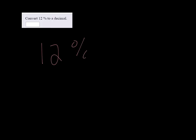Convert 12% to a decimal. So 12%, since it's a whole number, the decimal is right to the right of the rightmost number. And we want to convert it to a decimal, so we need to move it two places to the left. So 12% is equal to .12.